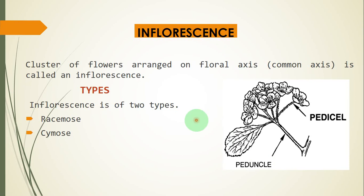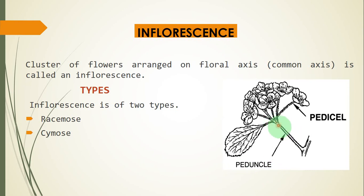We will cover two terminologies: number one is pedicel, and number two is peduncle. Pedicel is the stock of the flower. Flowers that have a pedicel are called pedicellate flowers, and flowers that do not have a pedicel are called non-pedicellate or sessile flowers. Peduncle refers to the main axis, common axis, or floral axis — it is the stock of the inflorescence.